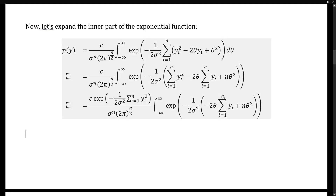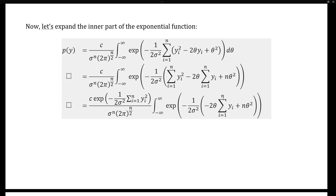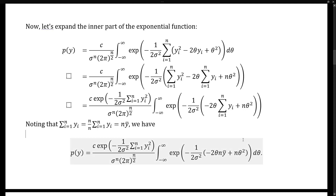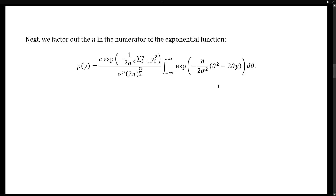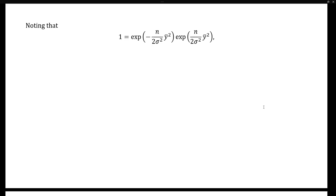Next, we note that we can write the sum of the yi's as n times y-bar, which allows us to modify the kernel inside the exponential function, giving us the updated expression here. Next, we're going to factor the n out of the expression in the exponential kernel. This looks a bit like the exponential part of a normal distribution, and we're going to exploit that. We want to complete the square so that the inner part is theta minus y-bar squared.